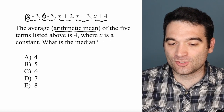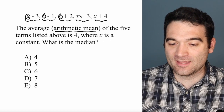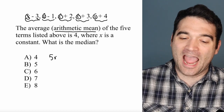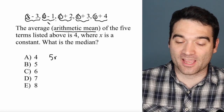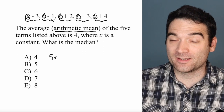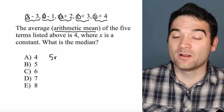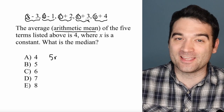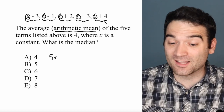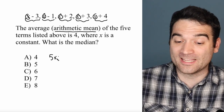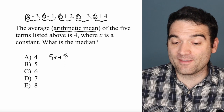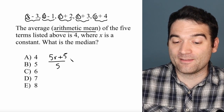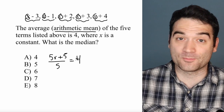I have 1, 2, 3, 4, 5 x's, so that's 5x. And then if I add these terms together, that's negative 1 minus 1 — negative 4 — plus 2 — negative 2 — plus 3 — positive 1 — plus 4 is positive 5. So 5x plus 5 divided by 5 is equal to 4.